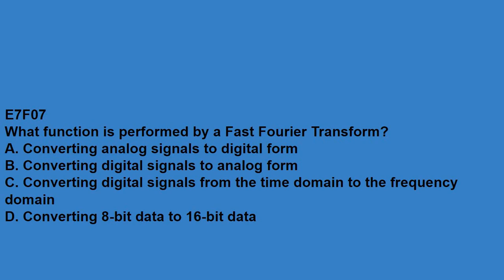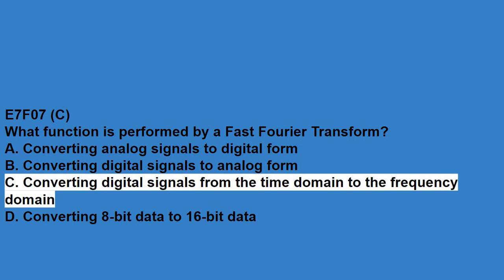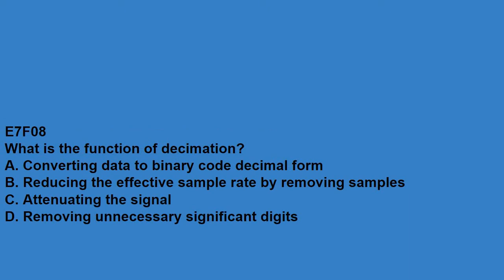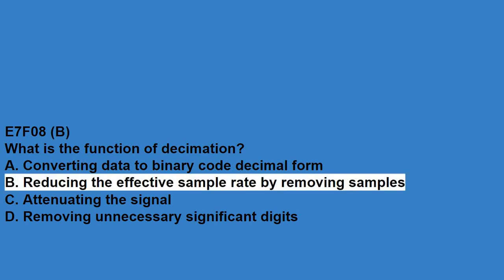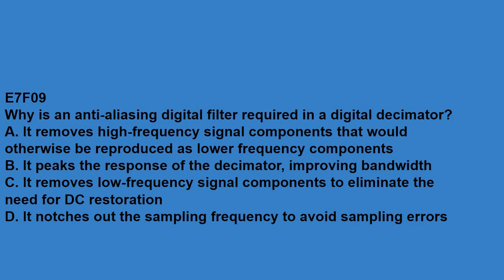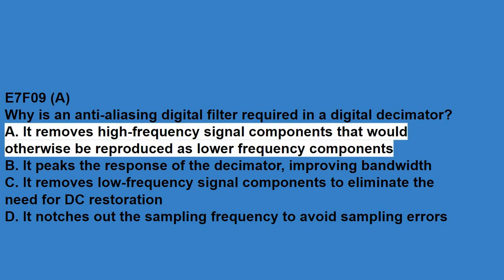E7F07, what function is performed by a fast Fourier transform? Converting digital signals from the time domain to the frequency domain. E7F08, what is the function of decimation? Reducing the effective sampling rate by removing samples. E7F09, why is an anti-aliasing digital filter required in a digital decimator? It removes high frequency signal components that would otherwise be reproduced as lower frequency components.